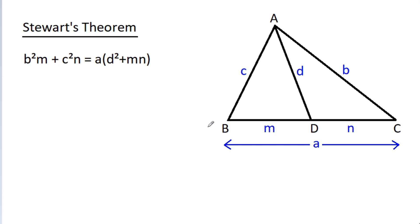In this video, we have been given that BC is a, AC is b, AB is c, AD is d, BD is m, and CD is n. Then we have to prove that b² m + c² n is equal to a times (d² + mn).